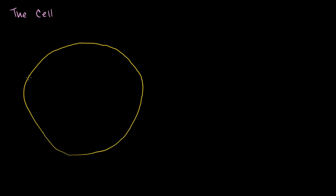The membrane kind of defines the cell—it defines it as this very, very small compartment. That's where the word cell came from. All cells have a cellular membrane.